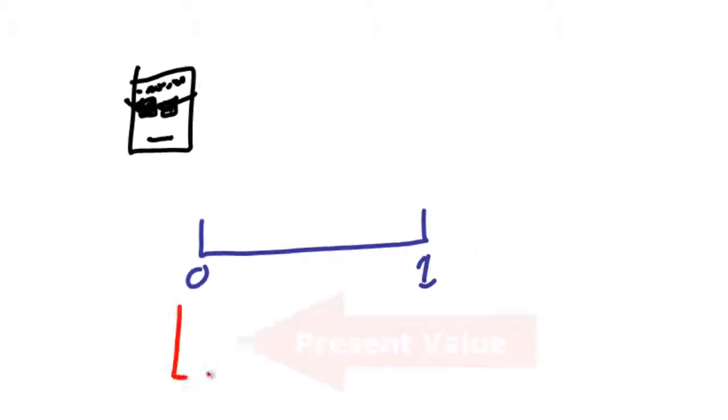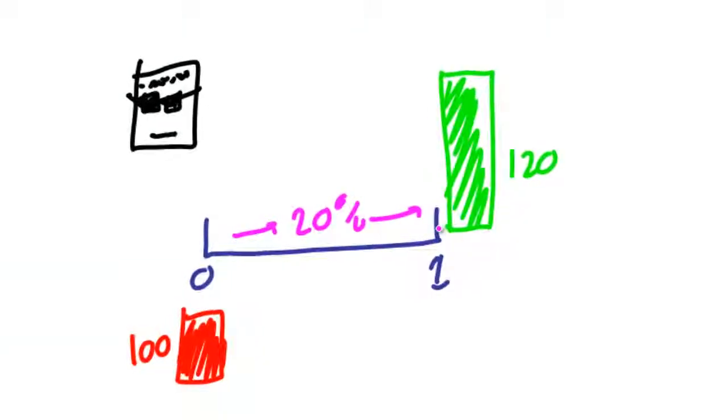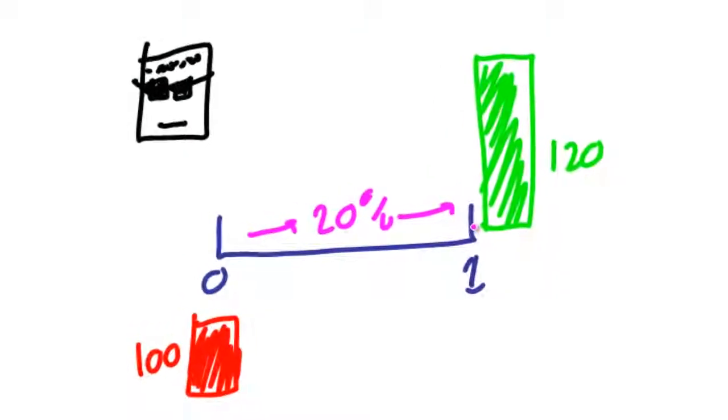He's got a personal interest rate when lending money to me of 20% per year. He's indifferent between $100 now or $120 in a year's time.